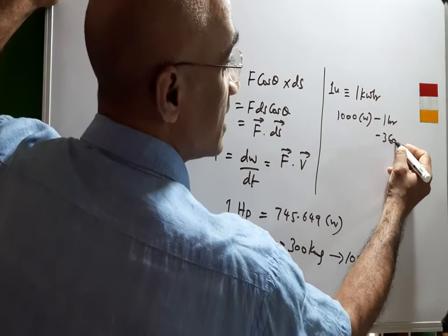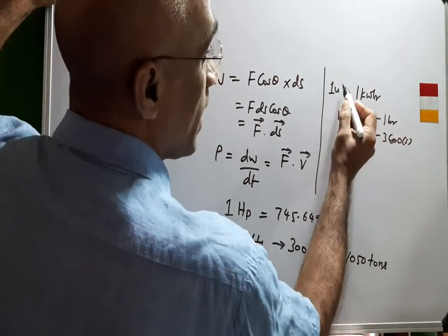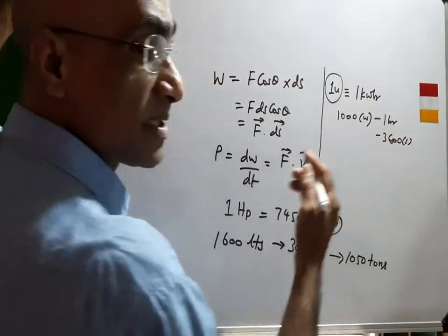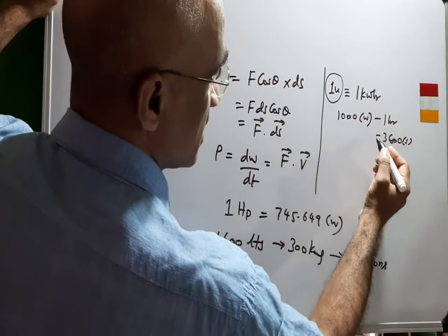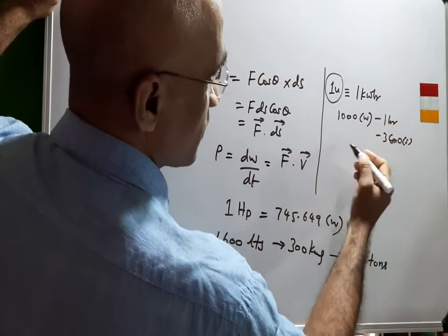3,600 seconds is going to consume one unit of power. This is nothing but the unit of energy. Clearly, Joule is nothing but which evolves out of this calculation.